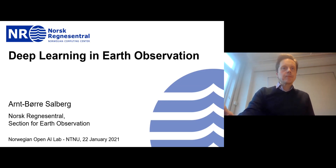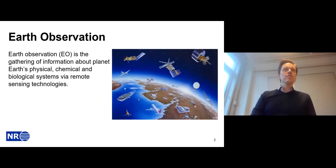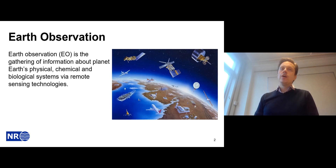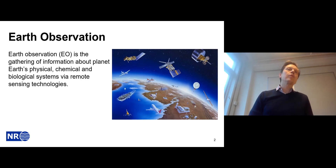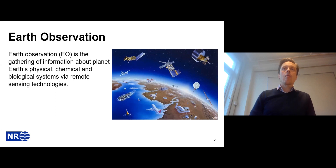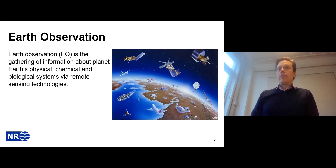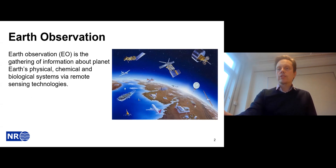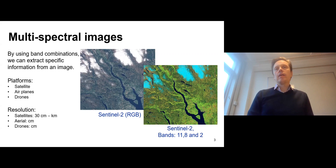Earth observation is about gathering information about the planet's physical, chemical, and biological systems using remote sensing techniques. At our section for earth observation, we mainly focus on data from satellites, airplanes, or drones, but we also have projects where we analyze seismic data, such as a ship surveying the ocean. All kinds of data are interesting to us.